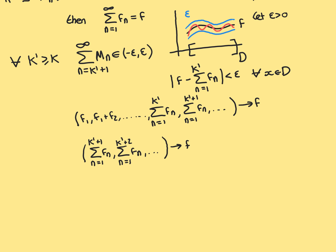Because this is just a whole bunch of sequences of real numbers at each x point, it's true that I can get rid of a finite number of terms from the front of the sequence without it making any difference to what the sequence converges to. I'm going to get rid of the first k prime terms of this sequence and just start from here, keeping the same infinite tail, and that will still converge to f at all x values in domain d. So the new sequence begins with the sum from n equals 1 to k prime plus 1 of f_n, then the sum from n equals 1 to k prime plus 2 of f_n, and this sequence still converges to f for all x in domain d.